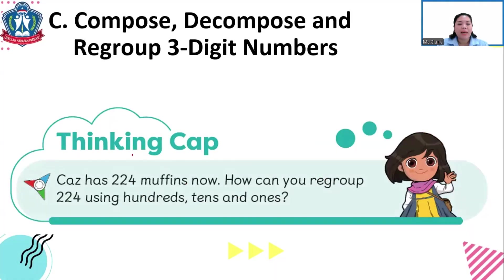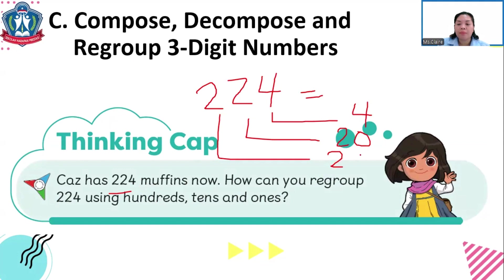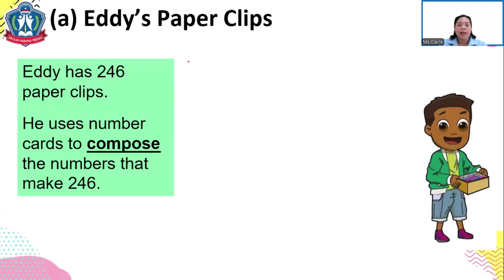For our thinking cap: Cash has 224 muffins. How can you regroup 224 using hundreds, tens, and ones? If we have 200 and 24 — the 4 is 4 ones, the 2 is 20 or 2 tens, and the 2 is 200 or 2 hundreds. That is the value of each digit of this number.